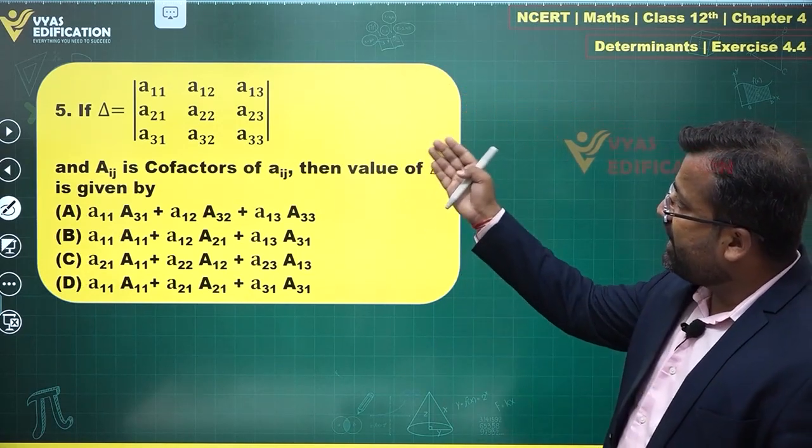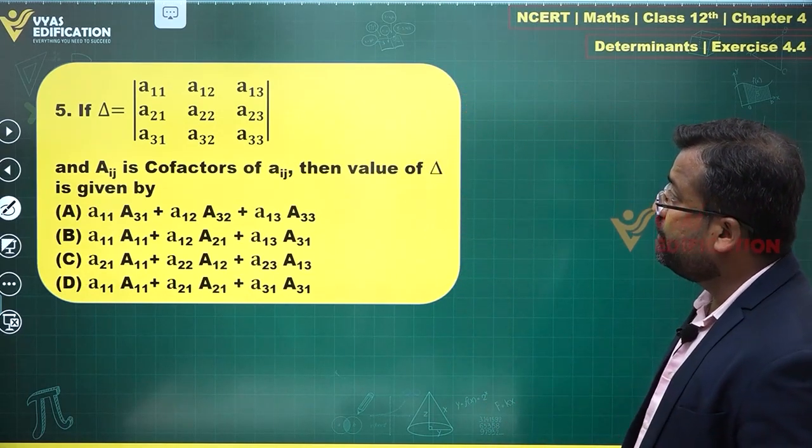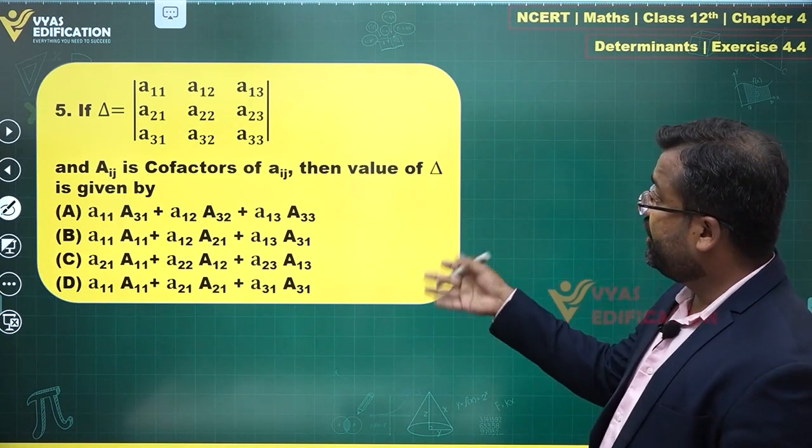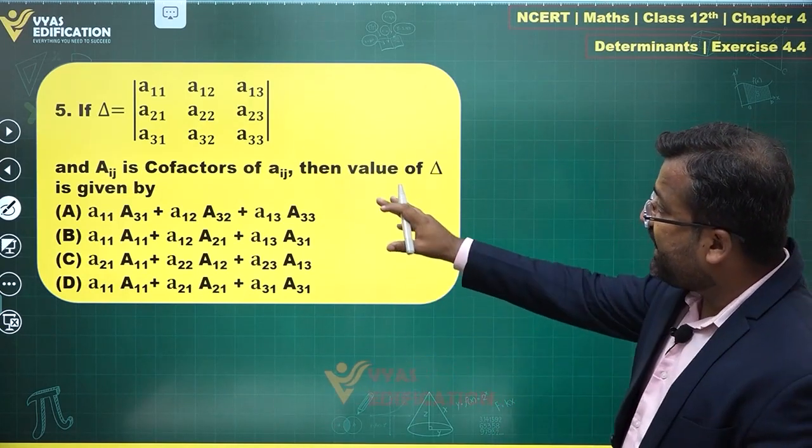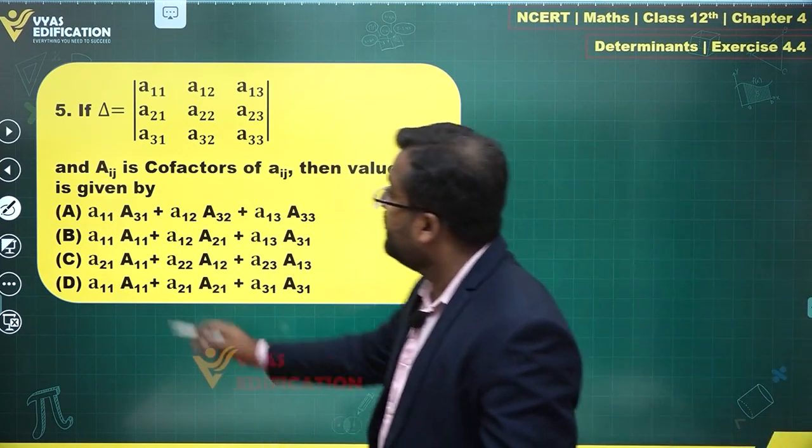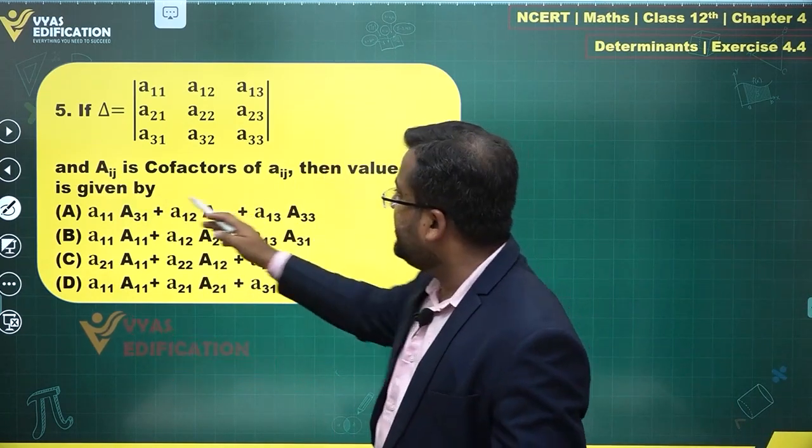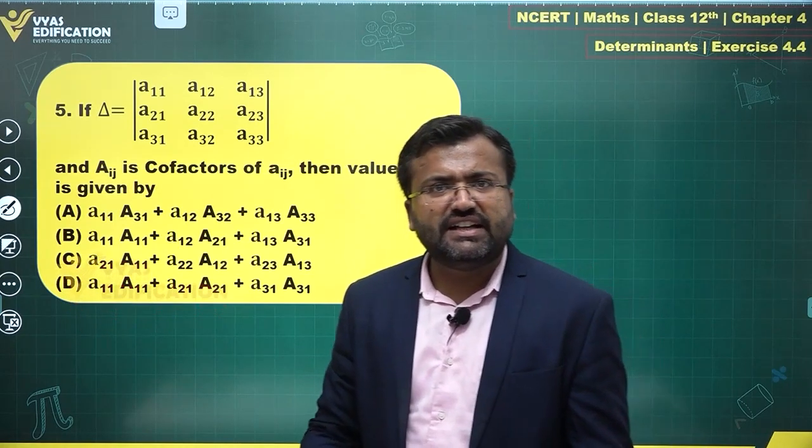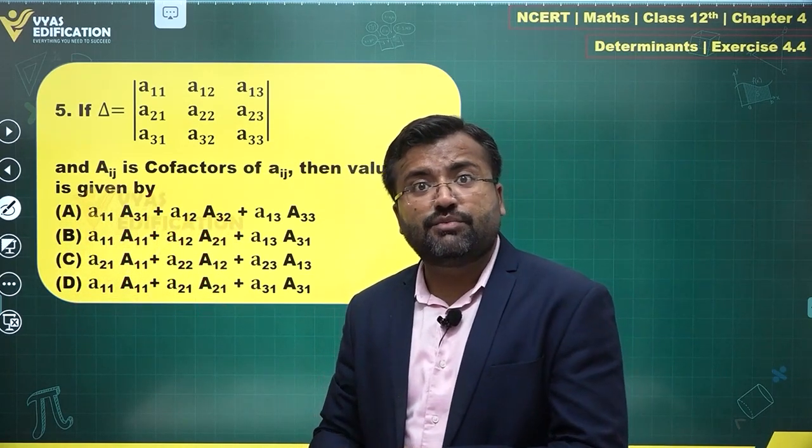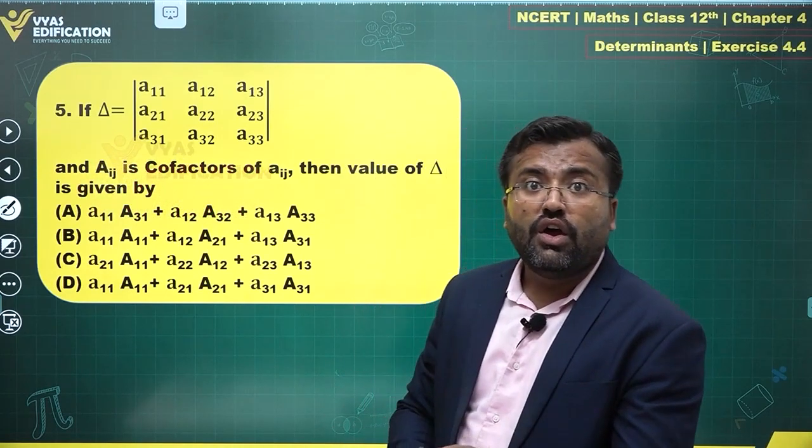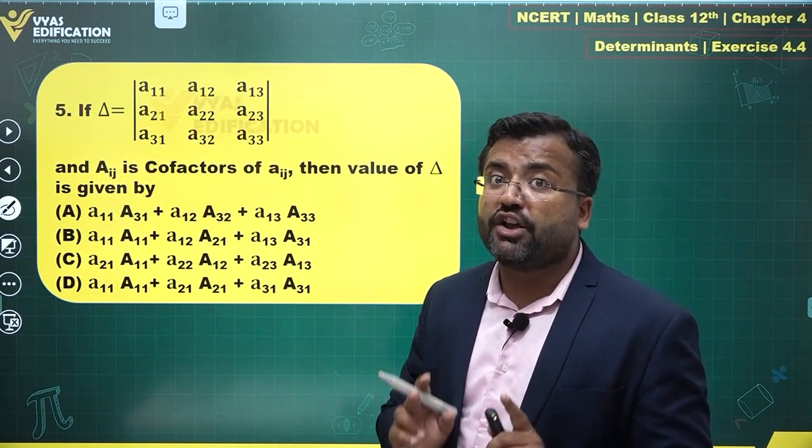If Δ equals a₁₁ a₁₂ a₁₃ a₂₁ a₂₂ a₂₃ a₃₁ a₃₂ a₃₃, a general 3 by 3 determinant, and Aᵢⱼ is the cofactor of aᵢⱼ, then the value of Δ is given by simply multiplying elements and corresponding cofactors of any row or any column together.